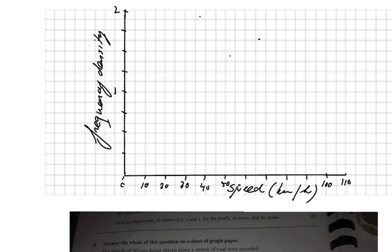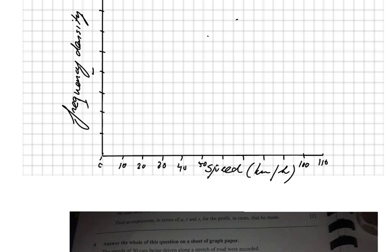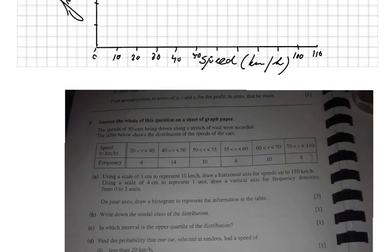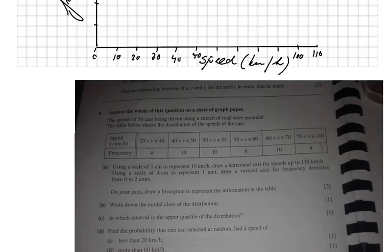What is frequency density? Frequency density is something we use, especially when the width of the classes is different. Otherwise, you can just use a bar chart with the frequency vertically. But now, the width is different. With frequency density, the area of each bar will equal to the actual frequency.